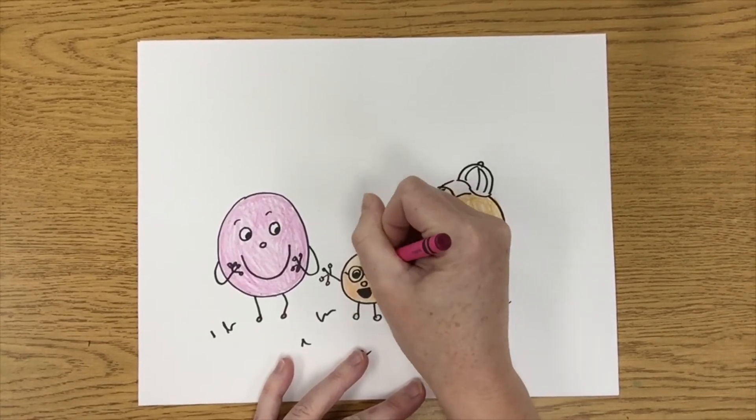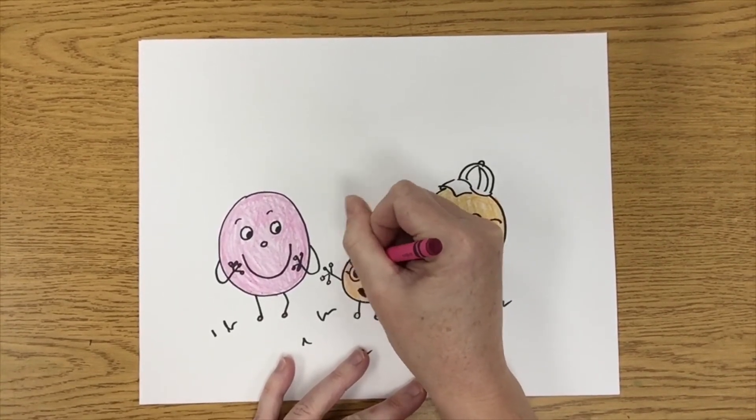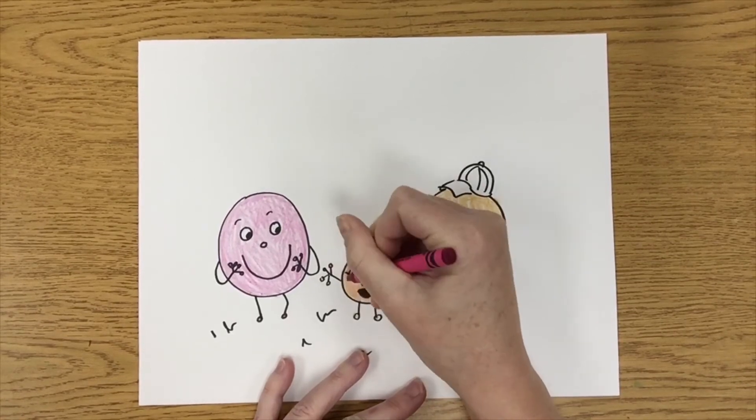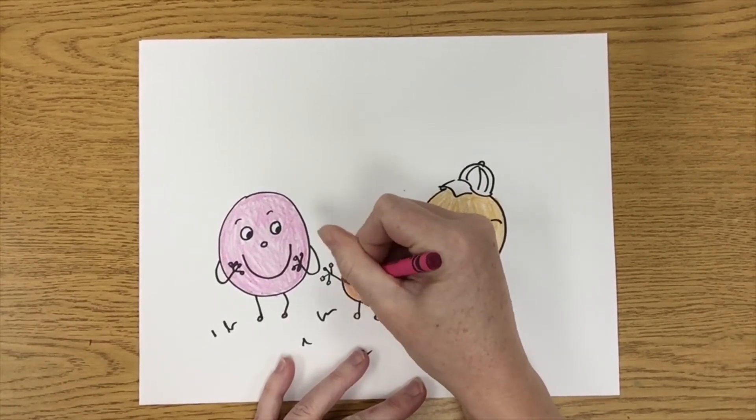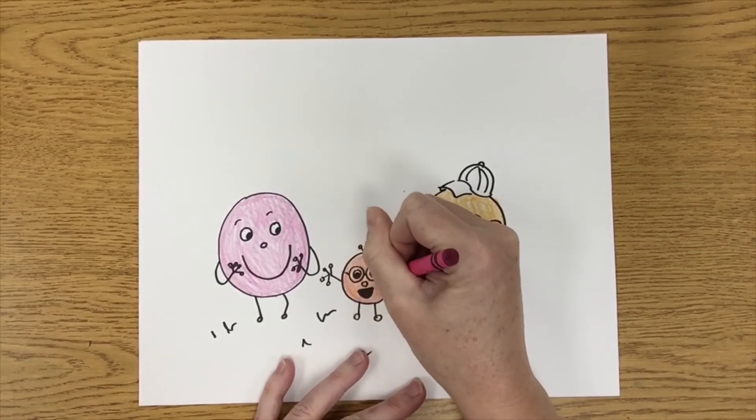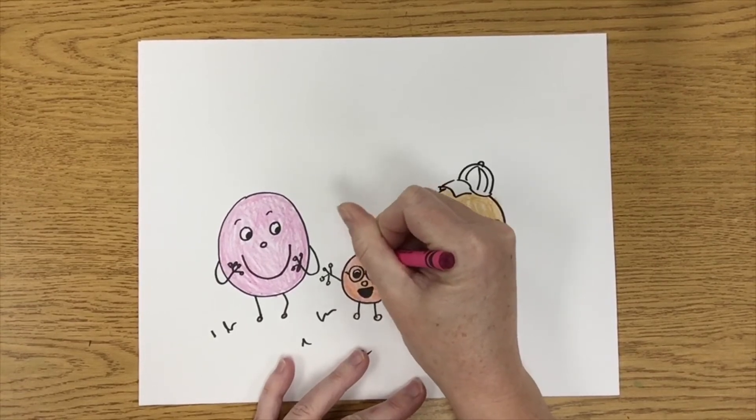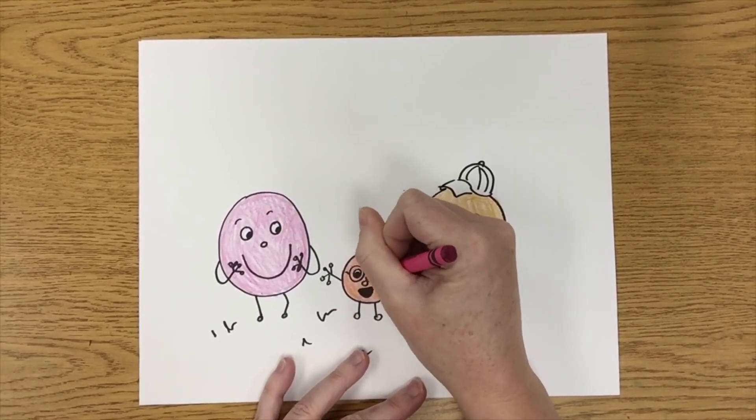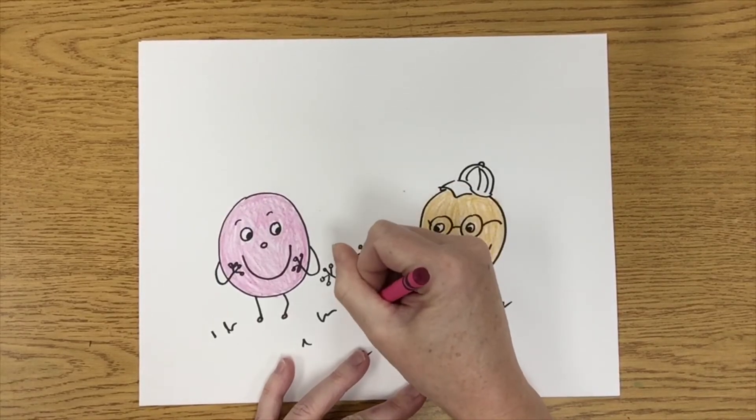We can start seeing it mixed together. And after I do it softly, if I want to see more color, I can kind of push down a little harder and just kind of work back and forth with the two colors until I'm happy with the result.